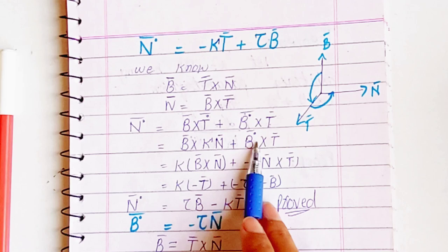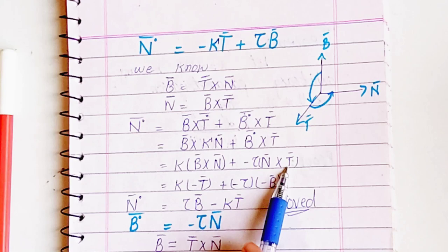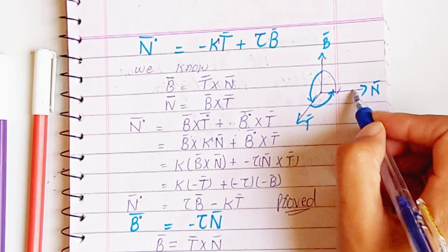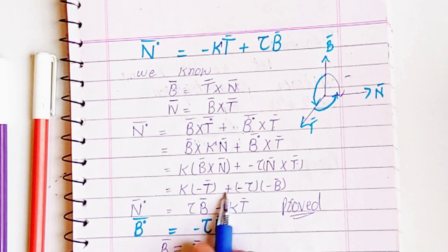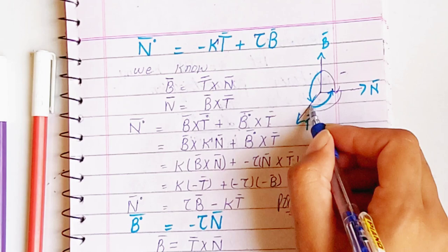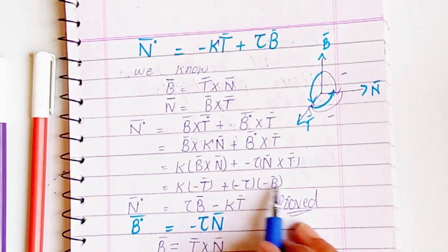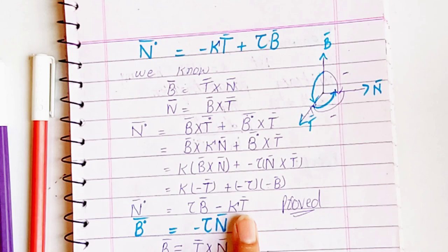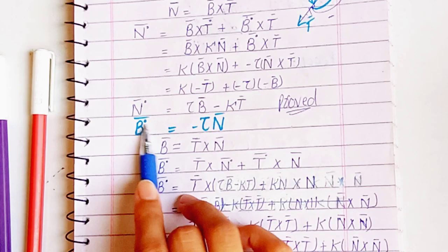For the derivative of B, I use the value of minus torsion cross T. This torsion contains a constant term, and N cross T gives us negative B. Putting this in, we have minus torsion N cross T. Taking the product, this is torsion B first and we take the negative term, giving torsion B minus curvature into T. We have proved it. The derivative of the binormal vector is minus torsion N.